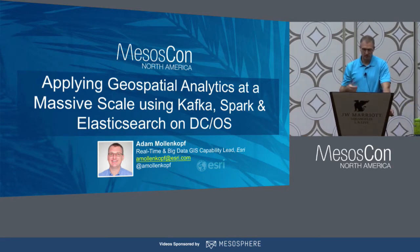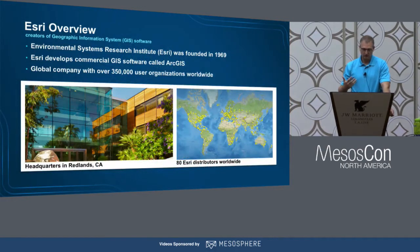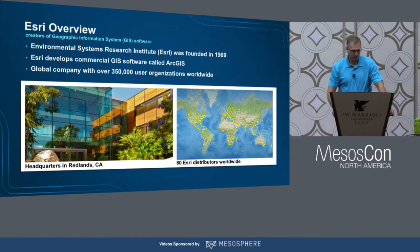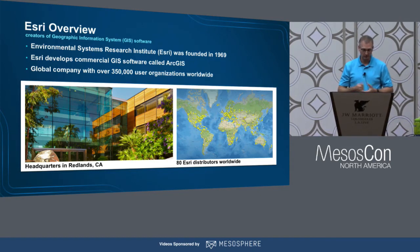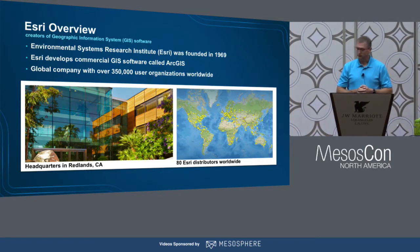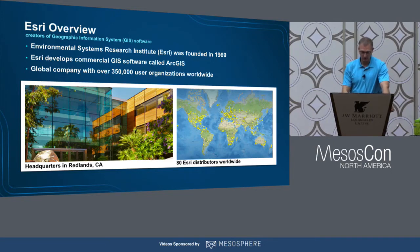I'm responsible for the real-time and big data capabilities at Esri — basically the IoT strategy, bringing in sensor data and other things. Esri has been around since 1969. We're one of the largest companies doing geographic software. We pretty much invented geospatial information systems in the late 60s, and we license our software to over 350,000 user organizations around the world.